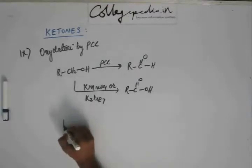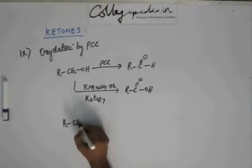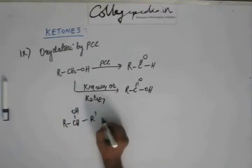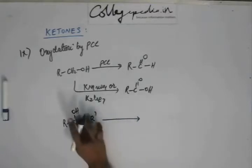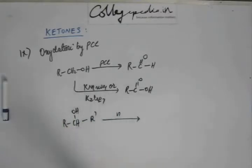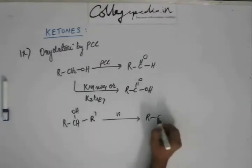One more thing, if we have a 2 degree alcohol. So when we add PCC, then again there is an oxidation of this alcohol to result a ketone this time.